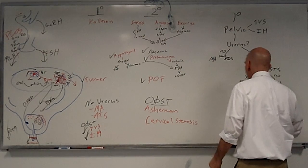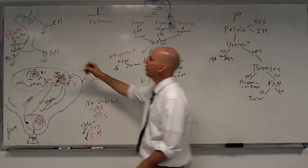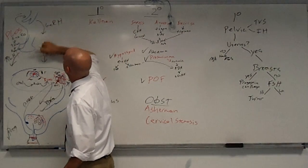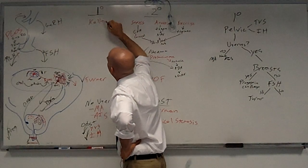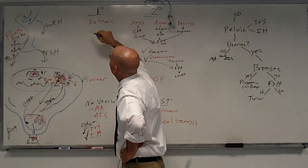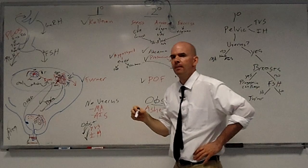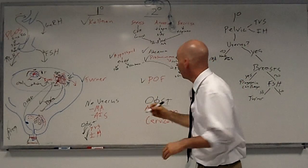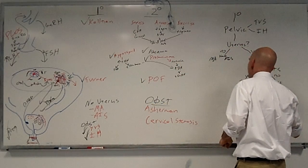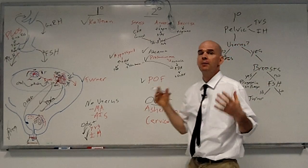If FSH is low, then you know the problem is up here somewhere. And the only thing that we have up here, the main thing we're looking at with primary amenorrhea is Kallman syndrome. To diagnose the Kallman for sure, the best thing to do might be an MRI.